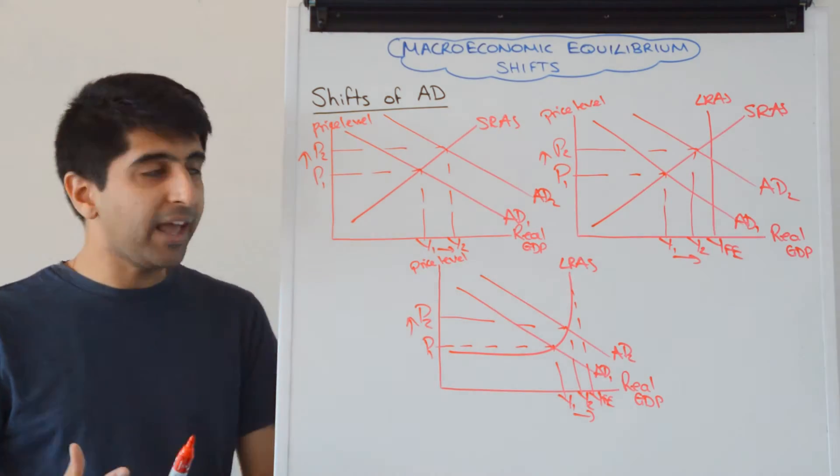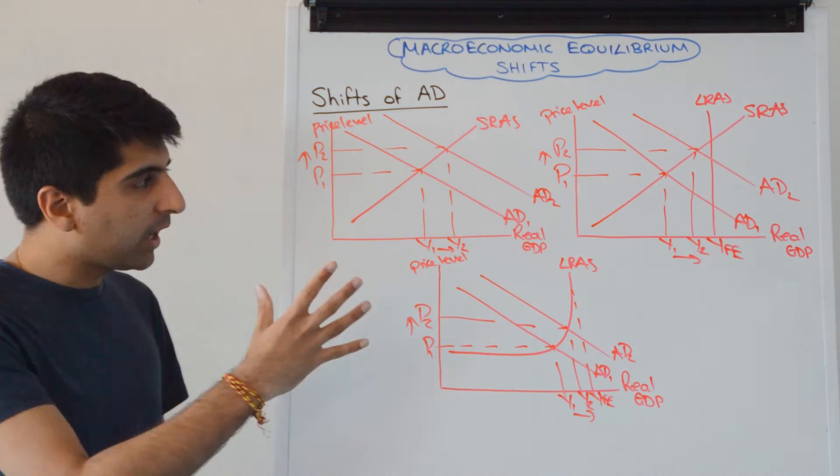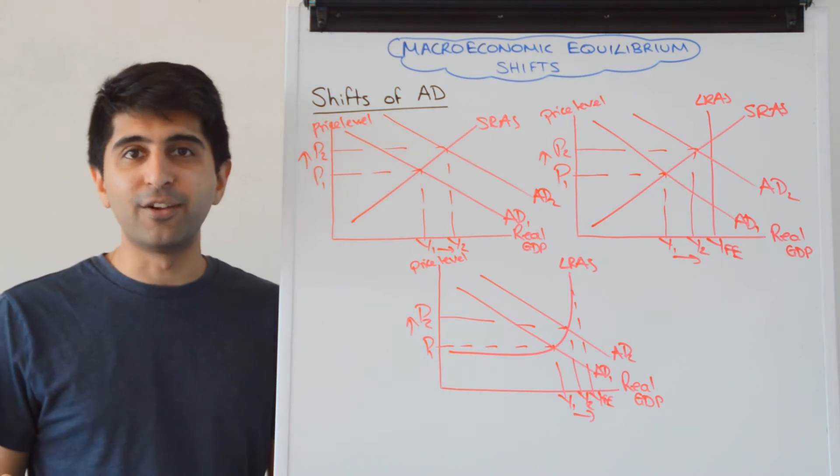If you're shifting AD to the left, you've got the same three options, just shift AD the other way. So that covers shifts of AD. Let's now move on to SRAS, shifting either right or left.